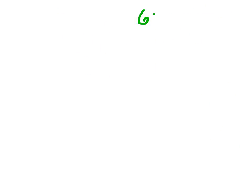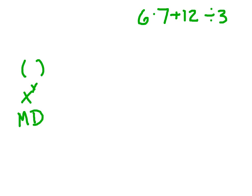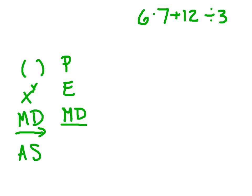Let's write that expression again and solve it using the order of operations. The order of operations says we do parentheses first, always. Then if you have anything with an exponent, you solve that. Then multiplication and division, doing those in order from left to right. Then addition and subtraction, also going left to right.